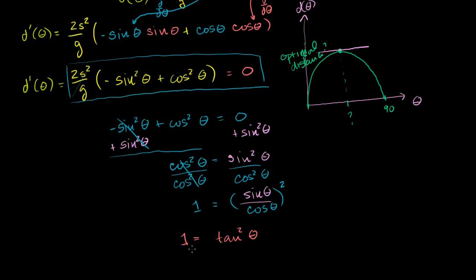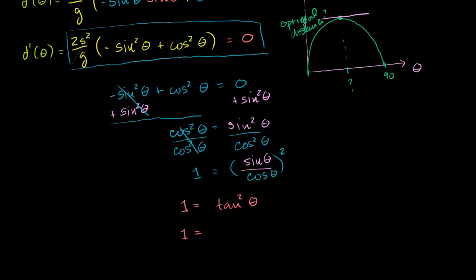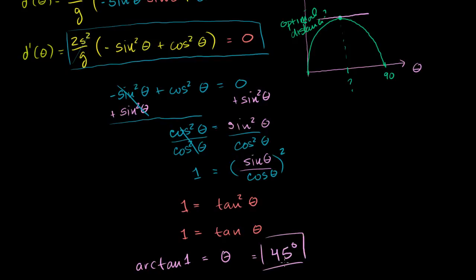We take the positive square root of both sides. Tangent is positive over the interval from 0 to 90 degrees, so that's fine. The positive square root of 1 is 1, so 1 equals tangent of theta. Taking the arc tan of both sides, arc tan of 1 equals theta. This is just a fancy way of saying theta is the angle whose tangent is 1. The arc tangent of 1 is 45 degrees, or pi over 4 radians. So our optimal angle is 45 degrees.